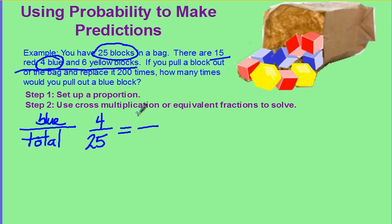Your second ratio of your proportion will be what you're trying to find out. You're going to do the experiment 200 times, and you're trying to find out how many of those times you will get blue.